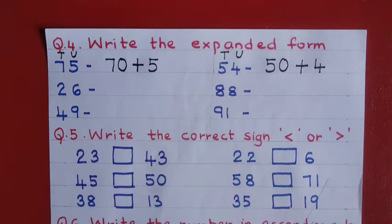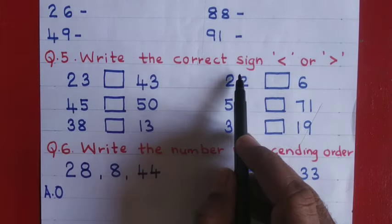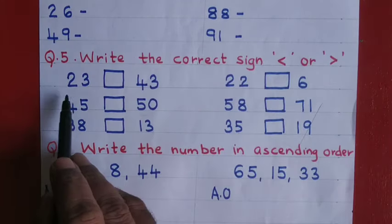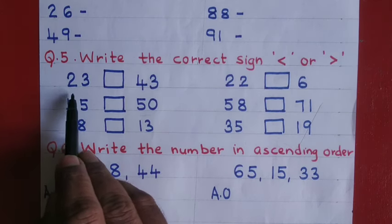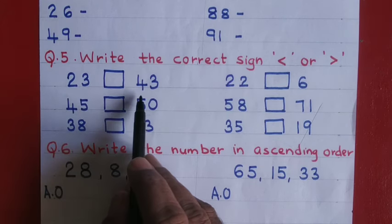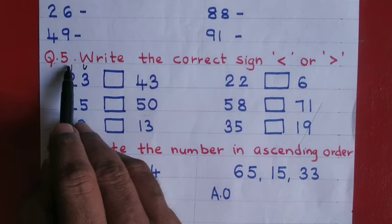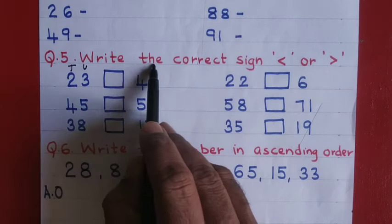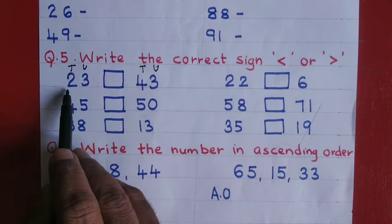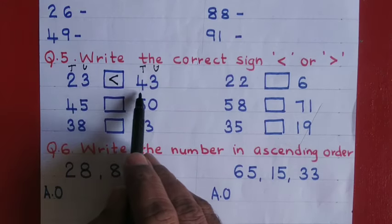Question number five: write the correct sign — less than or greater than. Always read from left and compare. Twenty three compared to forty three: in twenty three you have two tens, and in forty three you have four tens. Two tens are less than four tens, therefore twenty three is less than forty three.